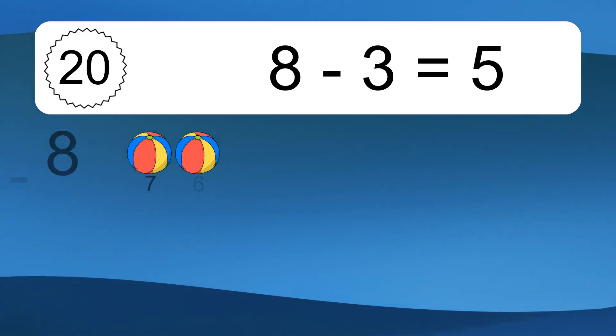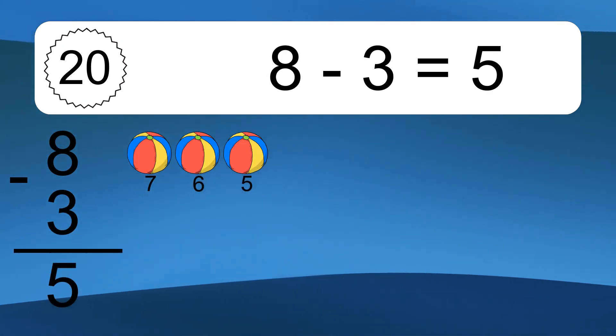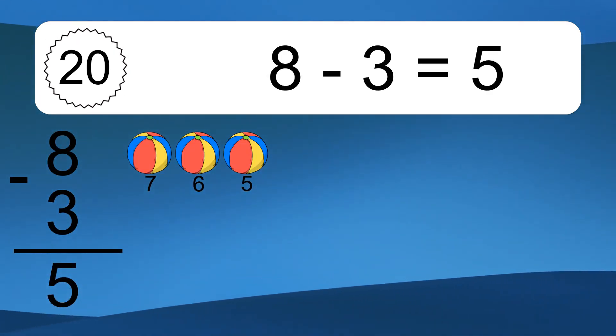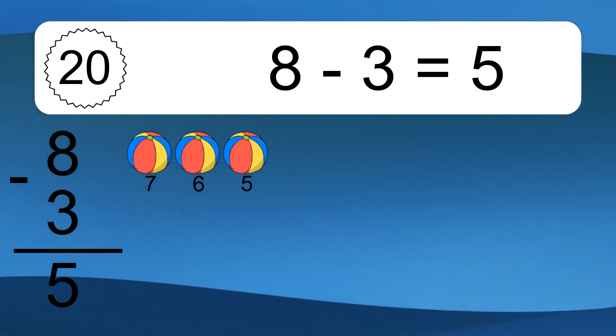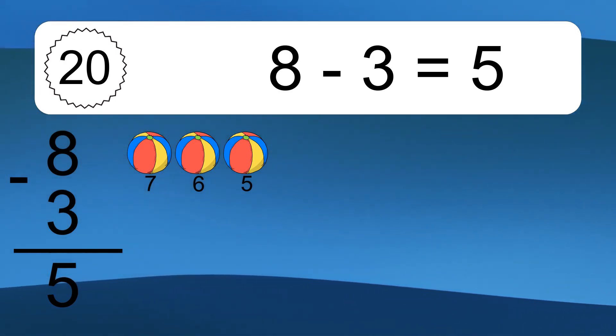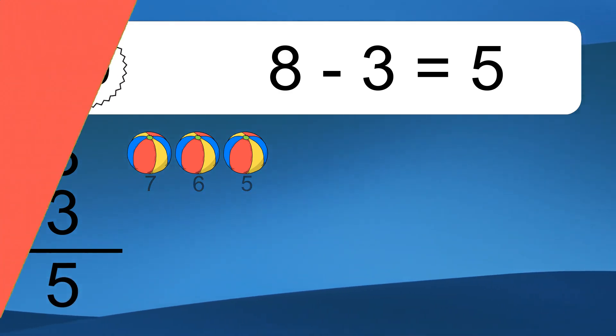8 minus 3 equals 5. Let's count it: 7, 6, 5.